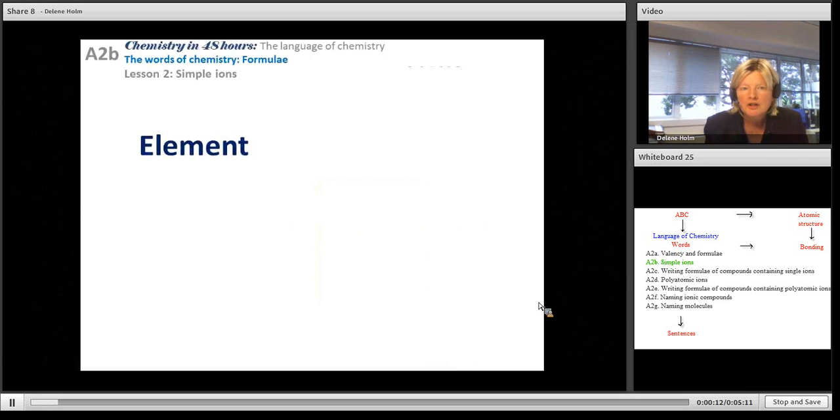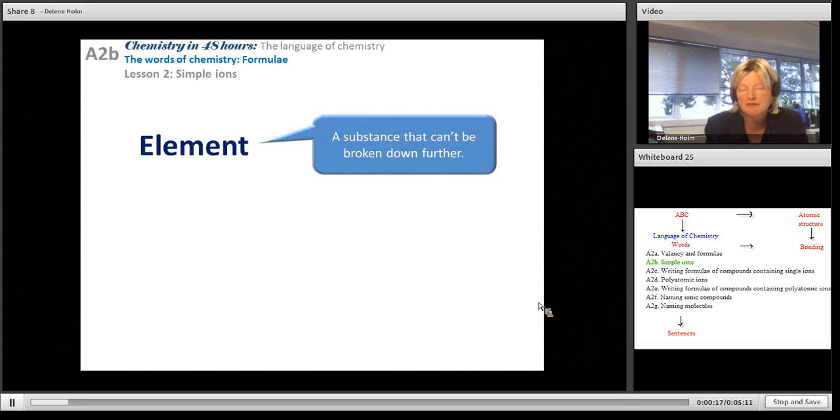Now in the previous part you looked at what an element is. It's a substance that can't be broken down further. To introduce a new term is atom because we need to know what an atom is before we can work out what an ion is.